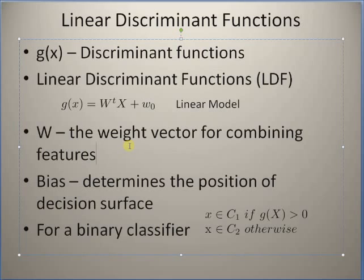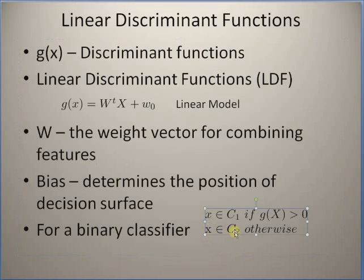The weight vector is the set of weights that we multiply the features with — basically we are linearly combining the features with this weight vector. The bias determines the position of the discriminant function from the origin. For a binary classifier, if g(x) is greater than 0 we classify the sample into class 1, and otherwise into class 2.